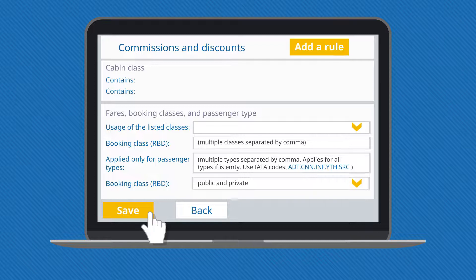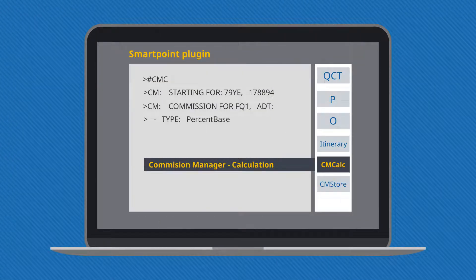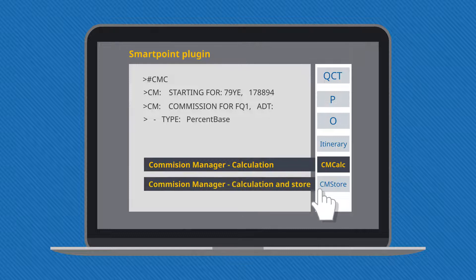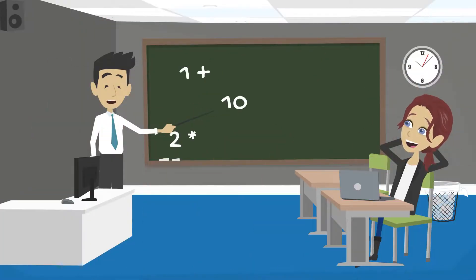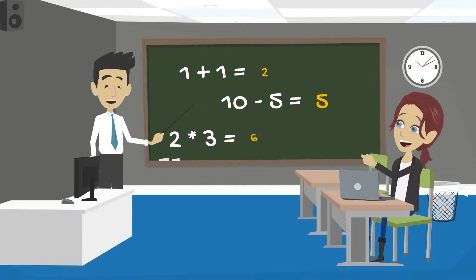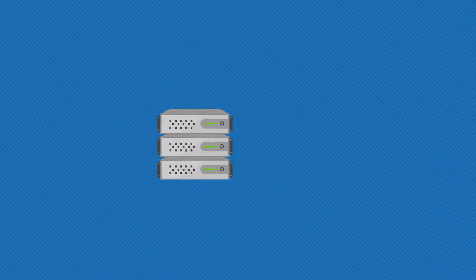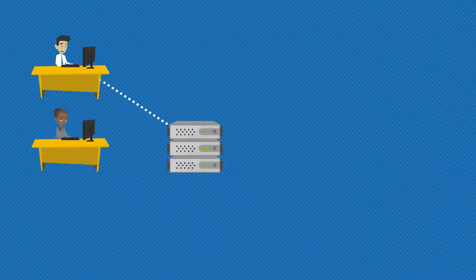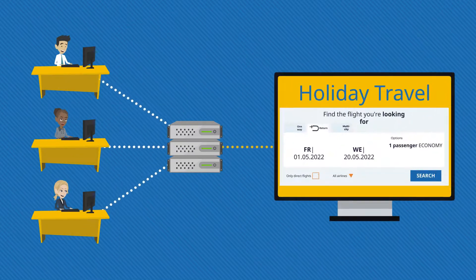Now that you have created and saved your commission rule, you can simply use it in your Smartpoint. And with just a few clicks, do your calculations. Commission Manager takes care of everything, and you need just a single person to set up the commissions for everyone. One database of commissions is used for operators and also for online reservations.